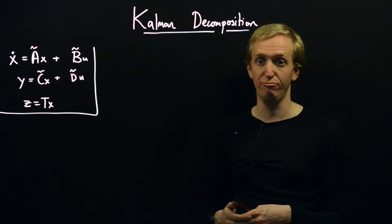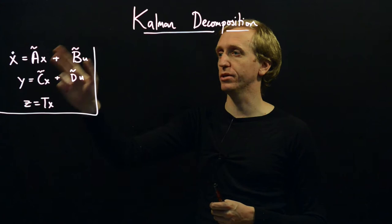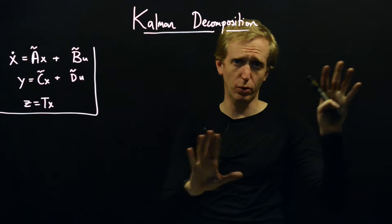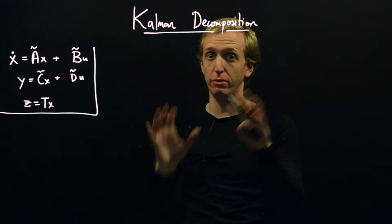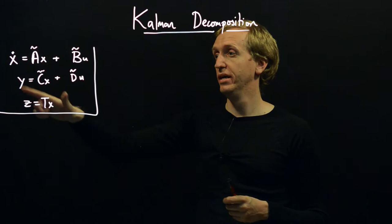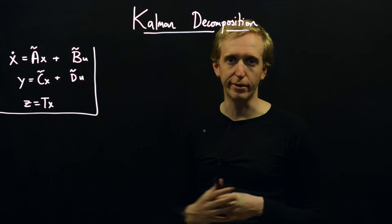The setup for what we're going to talk about is just a normal state-space model. I put tildes over the A, B, C, and D variables just because we're going to be writing more A's, B's, and C's. The things we're going to be writing out are our state-space model after we perform the coordinate transform, and I don't want these to be confused with the untransformed A, B, C, and D. We're going to introduce a particular coordinate transformation that reveals any unobservable and uncontrollable structures.